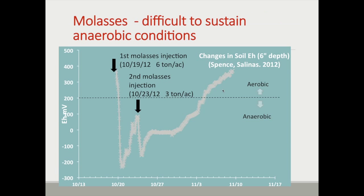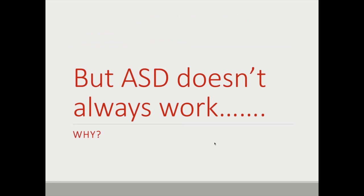Part of the reason molasses may not work as well is that it's difficult to sustain anaerobic conditions. Once molasses was injected, it went very anaerobic very quickly but started becoming aerobic again rapidly. A second injection brought it down again but it came up again. You have to do multiple applications of molasses to keep the EH low, and it's still not clear that under California conditions we get the same disease suppression as with rice bran.